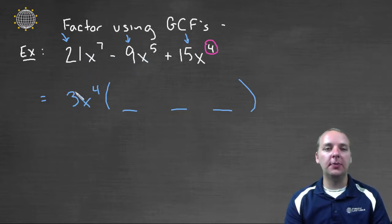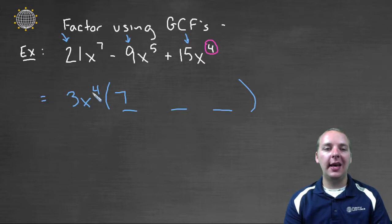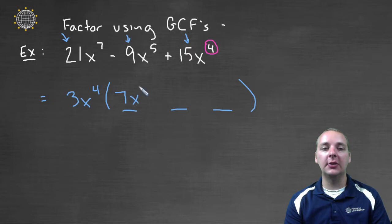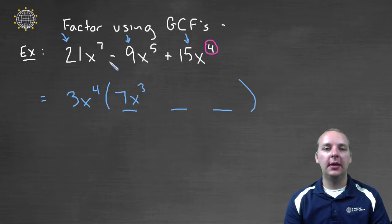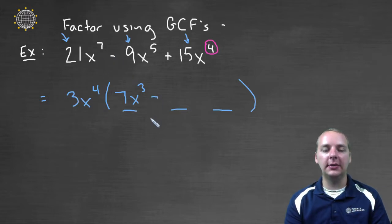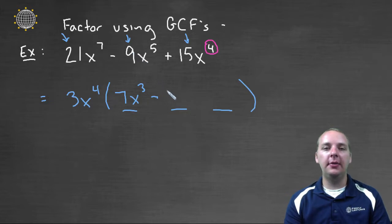Looking at the first term: three times what gives you twenty-one? That's three times seven. X to the fourth times what gives x to the seventh? That would be x to the third. Then we factor out three x to the fourth, keeping the minus sign. Three times what gives you nine? Three times three. X to the fourth times what gives x to the fifth? That's just x to the first.